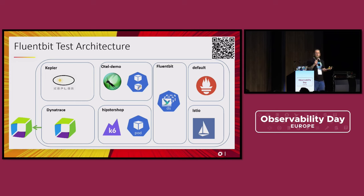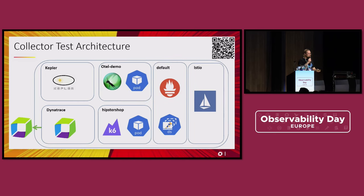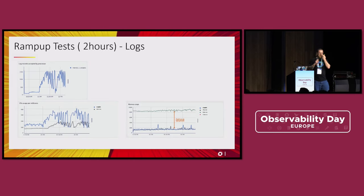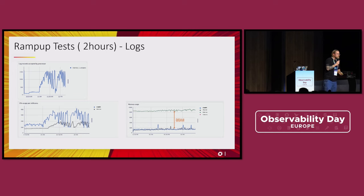FluentBit doesn't support OTLP gRPC, so to have a fair comparison I injected a sidecar collector in the OpenTelemetry demo to switch the protocol and send it to FluentBit. That's the major difference between both environments — in the Collector environment you don't have that sidecar collector running in the different pods. For the ramp-up test: I ran 50 users and added 50 users to each application every 30 minutes, so at the end of the test we had 200 users on Hipster Shop and 200 users on the OTel demo. By applying load, the apps produce more logs and more traces.